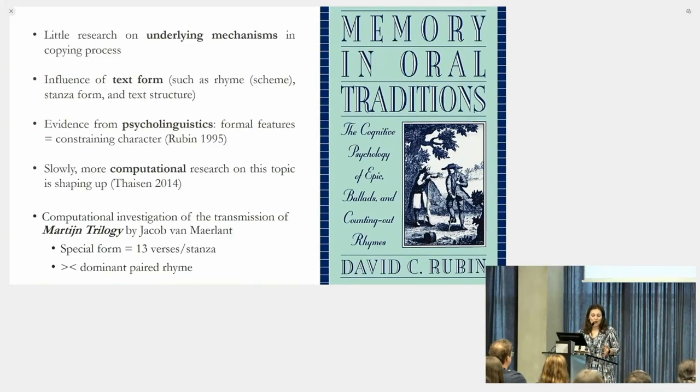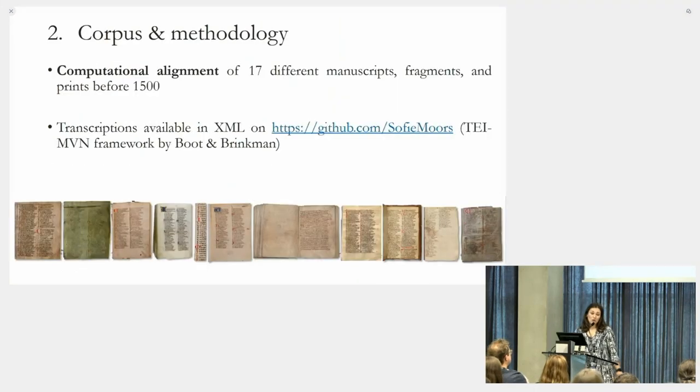I wanted to do a computational investigation of this constraint transmission hypothesis, looking at the Martijn trilogy by Jacob van Maarlant. But why this text? Maarlant did not use the dominant paired rhyme but invented a totally new form of 13 verses per stanza with a very unique rhyme scheme. Despite this very special form, little research has been done on the transmission of this text. I have computationally aligned all 17 different text witnesses of the Martijn trilogy before 1500 by using digital collation tools.